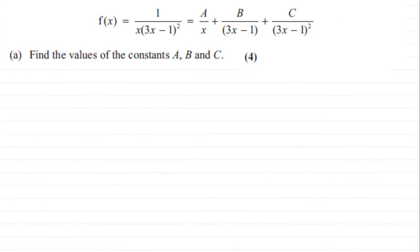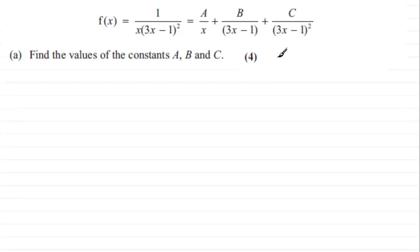In this question we need to work out some constants. We have f(x) equals 1 over x times (3x minus 1) all squared, and we're told that it equals a over x plus b over (3x minus 1) plus c over (3x minus 1) all squared. We need to find the values of the three constants a, b, and c. Pause the video to try it yourself before checking the solution.